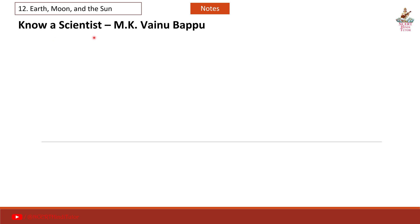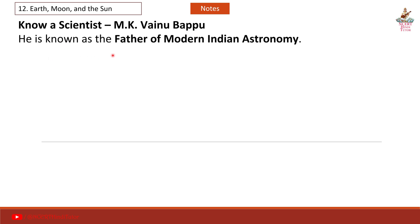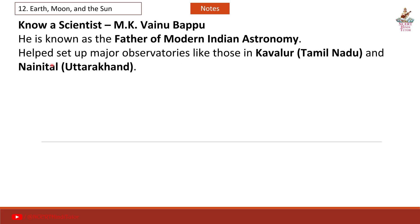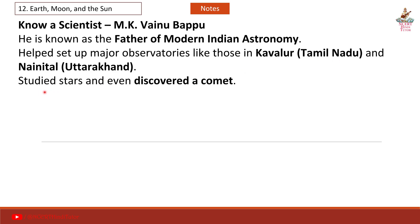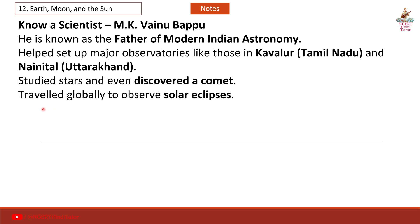Know a scientist: M.K. Vainu Bappu. He is known as the father of modern Indian astronomy. He helped set up major observatories like those in Kavallur, Tamil Nadu and Nainital, Uttarakhand. He studied stars and even discovered a comet, and travelled globally to observe solar eclipses.